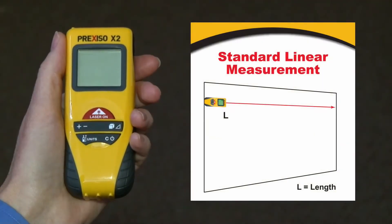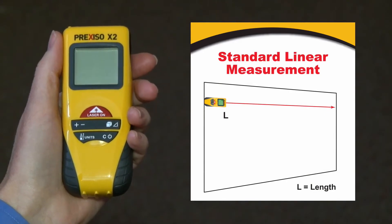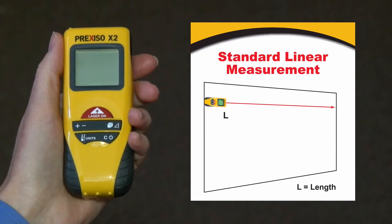The Prixiso X2 allows you to perform and calculate four different types of measurements. In this video I'll show you how easy and accurate it is to simply point and shoot a linear measurement.